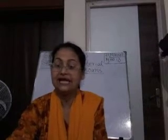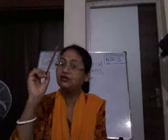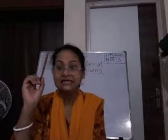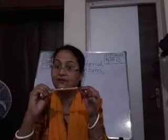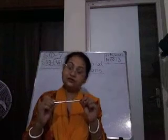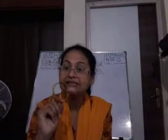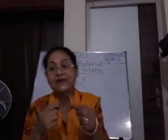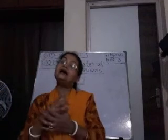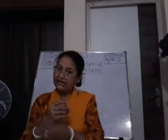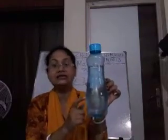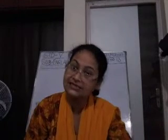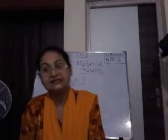I will give you examples. See, this is a pencil. This pencil is made up of wood. So wood is the substance or the material of which this pencil is made up of — so wood is a material noun. This bangle is made up of gold, so gold is a material noun. This water bottle is made up of plastic, so plastic is the matter of which this bottle is made — so plastic is a material noun.